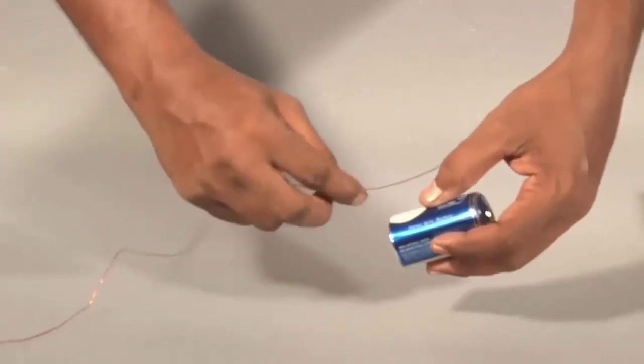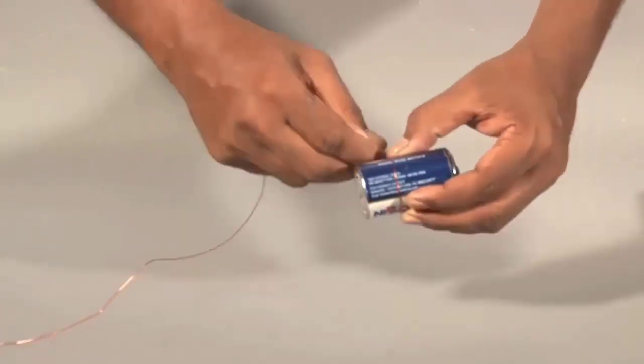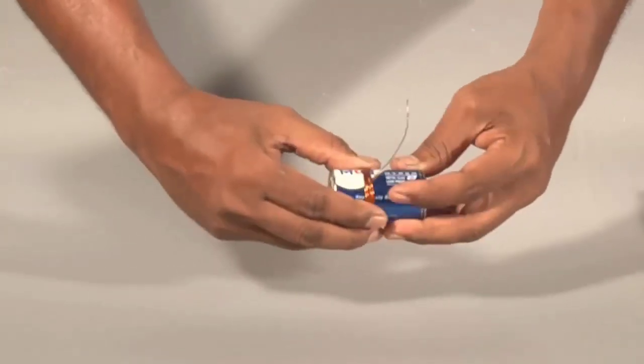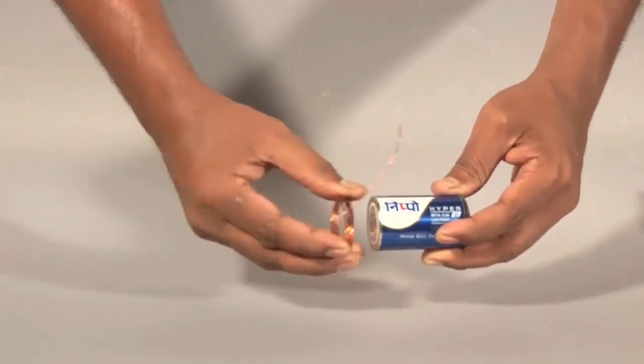Take a 1.5 meter of insulated copper wire and wind it around the battery. Take about 10 turns and then remove the coil like a spring.